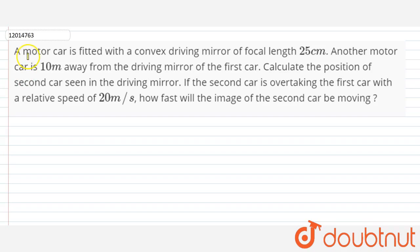So this question says that a motor car is fitted with a convex driving mirror of focal length 25cm. Another motor car is 10m away from the driving mirror of the first car. We have to calculate the position of the second car seen in the driving mirror.